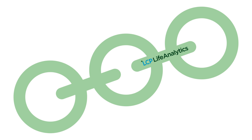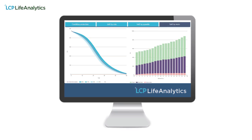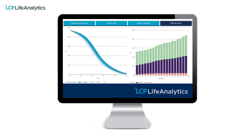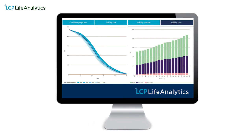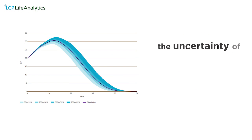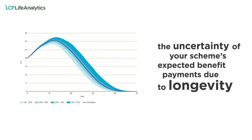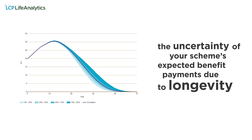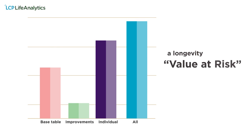LCP Life Analytics provides this missing piece. Recognising the importance of being able to measure longevity risk in a sophisticated way, we developed LCP Life Analytics, which provides pension schemes with a more robust measure of all three components of their longevity risk. It allows you to see graphically the uncertainty of your scheme's expected benefit payments due to longevity, and the impact of longevity hedging options such as a pensioner buy-in. It also provides a longevity value at risk figure for each component, so that you can easily incorporate longevity and investment risk into a single framework.